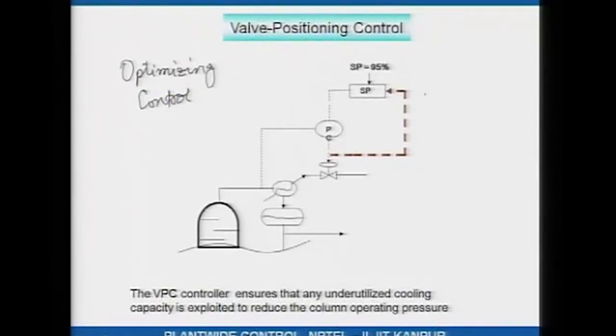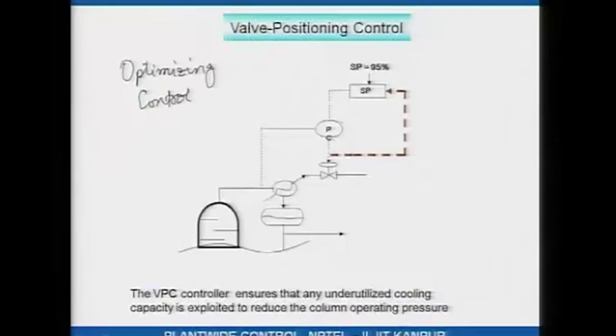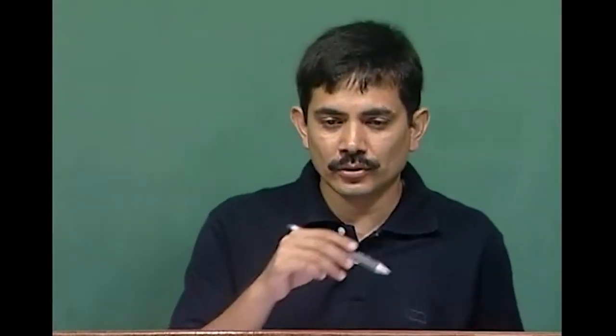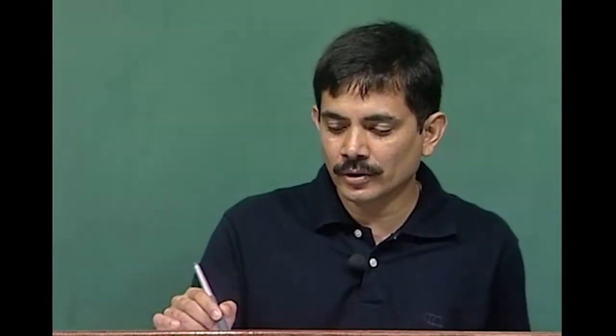Getting back to the floating pressure example: you will notice the pressure of the column will float. On hotter days, the minimum achievable operating pressure would be higher; on cooler nights, the column loses more heat and the operating pressure would be slightly lower. So if you look at the diurnal cycle, you will see that the pressure set point follows the diurnal cycle — pressure increases during the day and decreases at night.